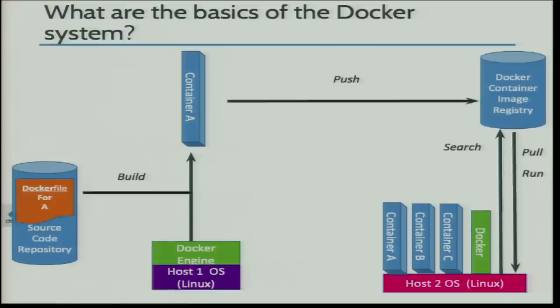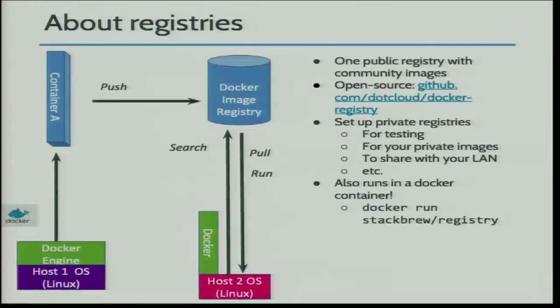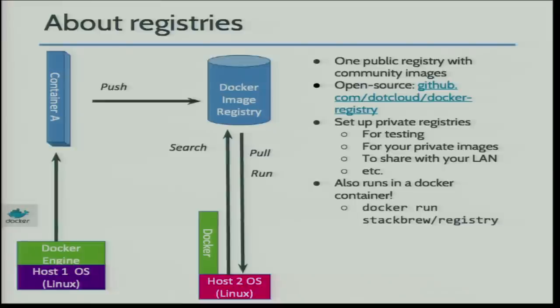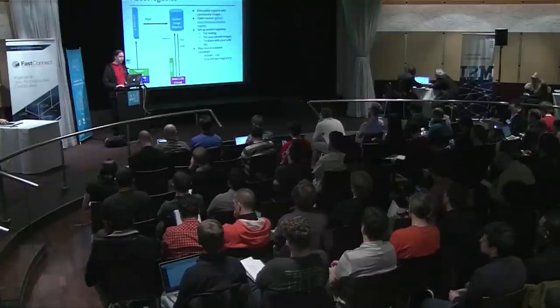On registries: we have one public registry open to anyone with an account, with all the community images. The registry is open source — you can find it on github.com/docker/registry. Because it's open source, you can also set up your own private registries, maybe because you want private images only inside your local network, or for faster sharing. You can also run the registry inside a Docker container itself — just do docker run stackbrew/registry and you have a registry up and running.